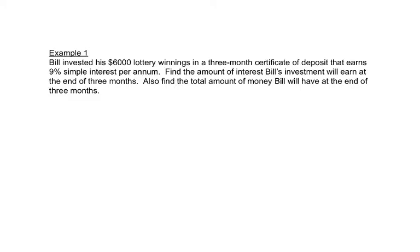This problem says Bill invested $6,000 of his lottery winnings into a three-month certificate of deposit that earns 9% simple interest per annum. Find the amount of interest Bill's investment will earn at the end of three months. Also find the total amount of money Bill will have at the end of three months. So this $6,000 is our principal, and this 9% is our rate.